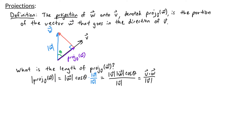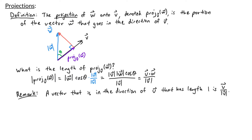Now we just need to express this projection as a vector. Note that a vector that goes in the direction of v with length 1 is v divided by the length of v, because if we take any vector and scale it by 1 over its length, the resulting vector would have length 1. With that in mind, the projection of w onto v is equal to v dot w divided by the length of v, times v divided by the length of v.